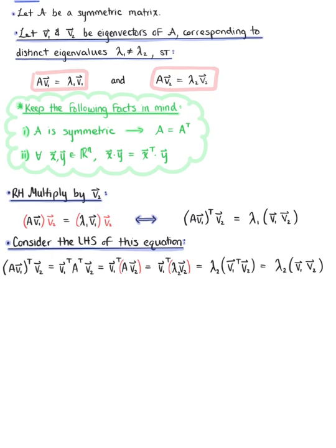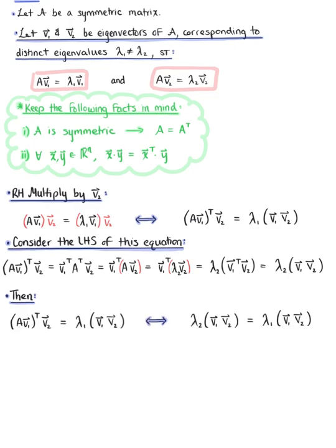With this simplification in mind, we can rewrite the original equation as λ₂ times the dot product of v₁ with v₂ equals λ₁ times the dot product of v₁ with v₂. Bringing all terms to the left-hand side and factoring out the scalars, we are left with (λ₂ − λ₁) times the dot product of v₁ with v₂ equals zero.